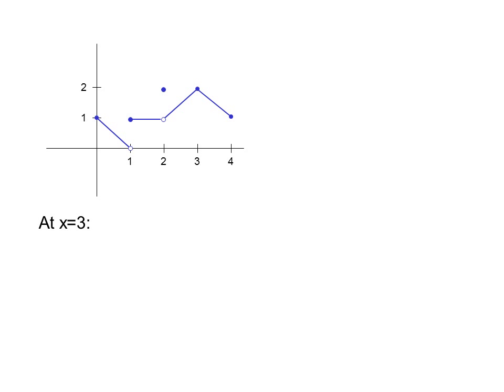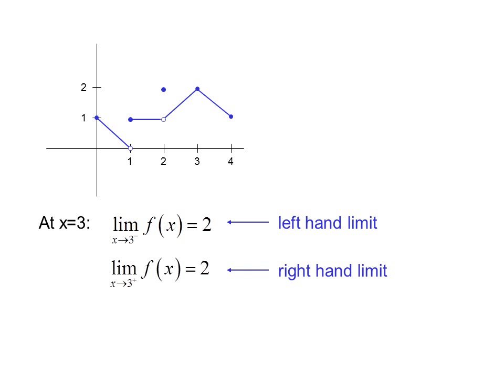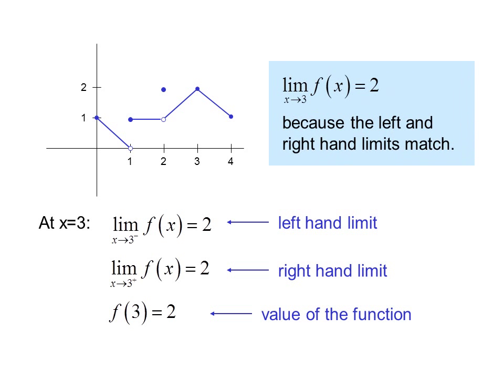At x equals three: the limit as x approaches three from the left of f of x equals two, and the limit as x approaches three from the right is also two. So we're approaching two from the left and approaching two from the right. In this case, the value of the function f of three is also two — that's nice, but it's irrelevant because we're just looking for the limit. The limit as x approaches three of f of x equals two, because the left and right-hand limits match.